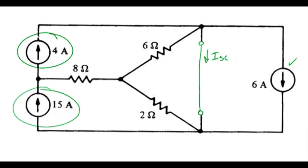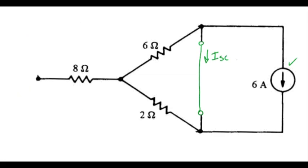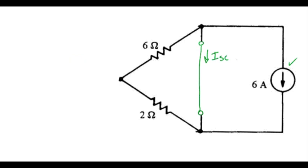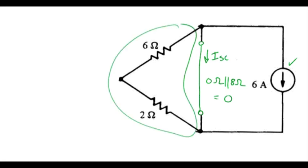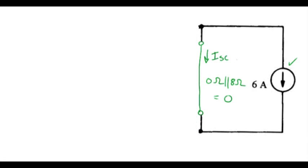So let's go ahead and remove those devices — effectively set them to zero. This resistor dangling in the air is a non-player. We basically have a zero ohm resistor in parallel with an 8 ohm resistor, and that's zero, so those devices can be removed. That leaves 6 amps circulating in the direction opposite to the defined direction for I_SC, meaning we get minus 6 amps as the contribution from the 6 amp source.